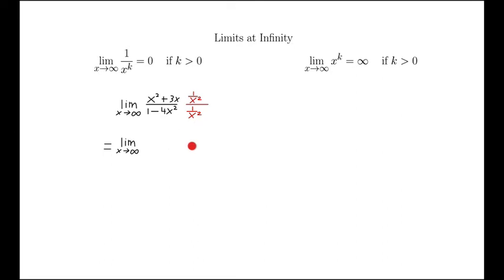What it becomes in this case is we distribute the 1 over x squared through, and we have x squared over x squared, 3x over x squared, and similarly on the denominator. And now each individual term can be simplified.